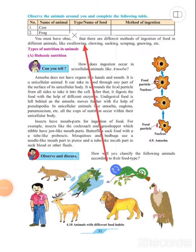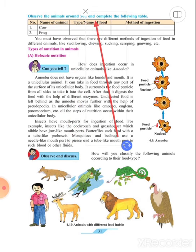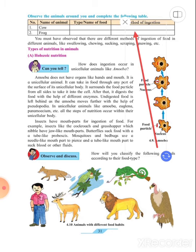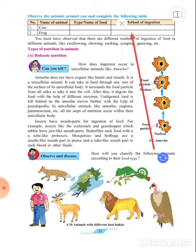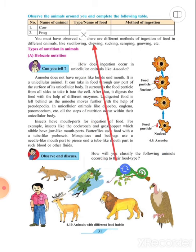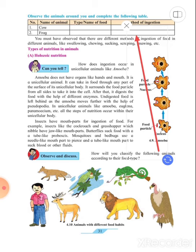Observe the animals around you and complete the following table. You have to observe animals around you. Write the name of animal, for example, cow and frog. Type or name of food - what type of food they eat. And method of ingestion - how do they intake their food? For example, we chew the food. Some animals suck their food, like mosquitoes or butterflies or flies. Some are swallowing, or scrapping, or gnawing. These are the methods of ingestion. You must have observed that there are different methods of ingestion of food in different animals.